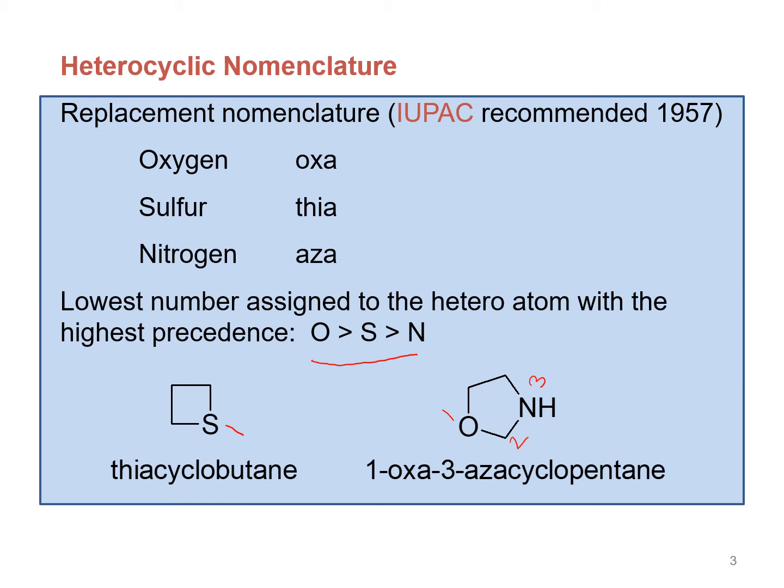After starting from oxygen, we number either clockwise or anti-clockwise, whichever gives lower locants to the hetero atoms. For this compound we number anti-clockwise according to the IUPAC system, because anti-clockwise gives nitrogen the position number three, which is lower. According to this nomenclature, the name of this compound is 1-oxa-3-azacyclopentane.